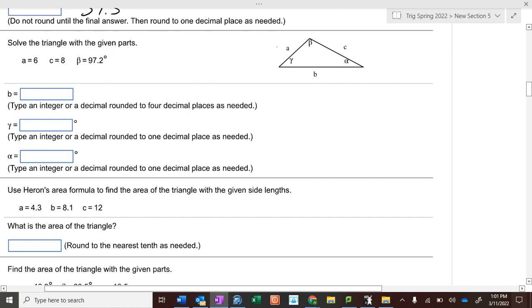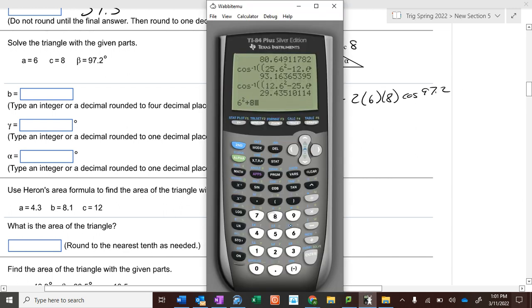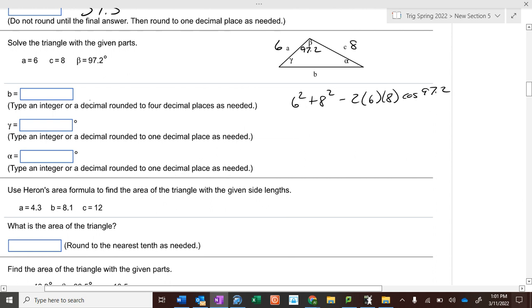Okay, side-angle-side: 6, 8, 97.2. So we use one of the top ones. So 6 squared plus 8 squared minus 2 times 6 times 8 cosine of 97.2. We get a big number, so we have to take the square root of that to find what we're actually looking for, which is 10.5845, because they want four decimal places.